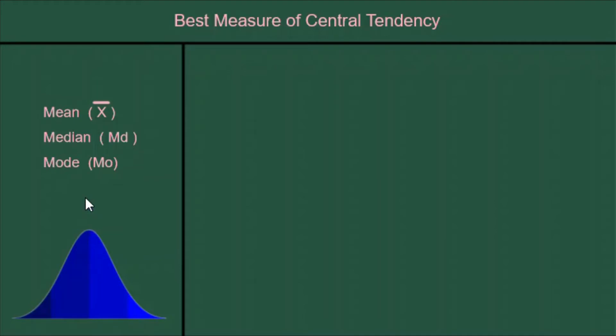The better the set of data, the more likely all three of these will land really close together. If you have a perfect set of data that makes a perfect bell curve, all three of these values are the same value, but we usually don't have perfect data.